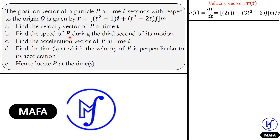Part b asks for the speed of the particle during the third second of its motion. Note: the question did not ask for the speed after three seconds — it says during the third second. The speed is the magnitude of the velocity. The speed during the third second is the magnitude of the difference between the velocity after three seconds and the velocity after two seconds.